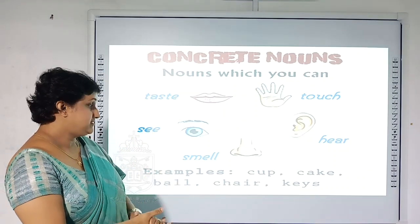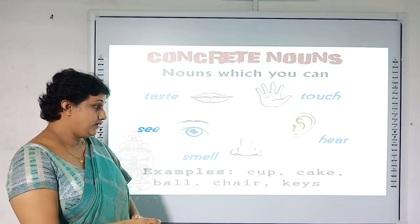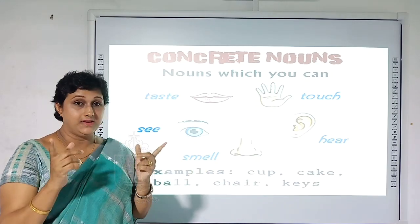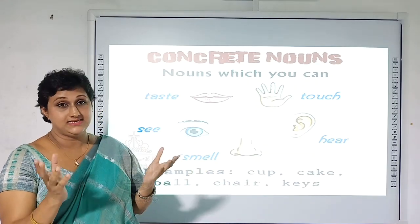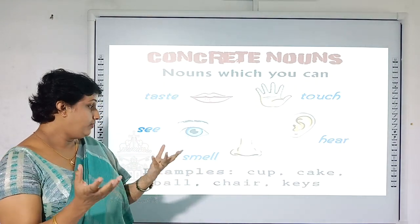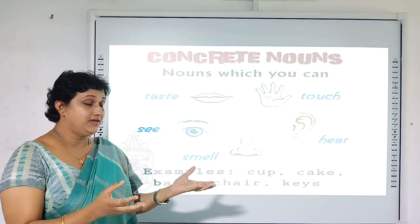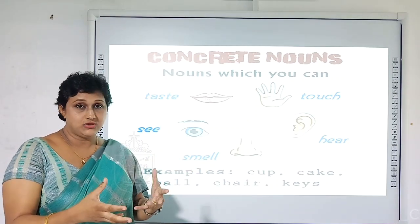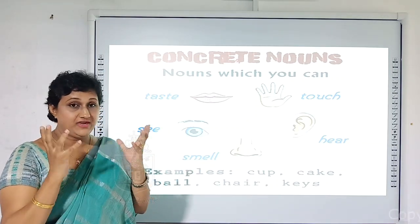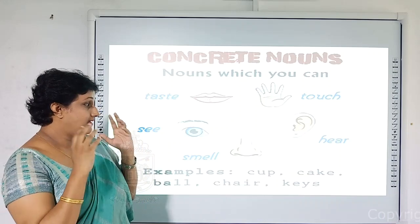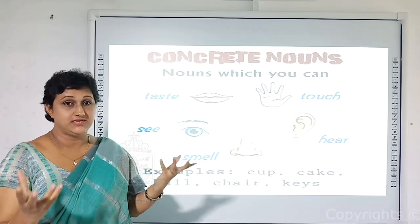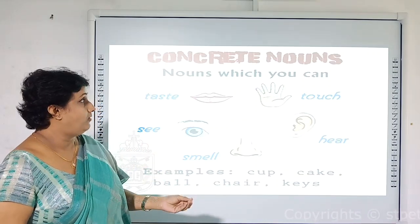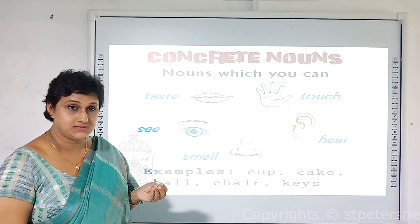Here are some examples of concrete nouns: cup — you can hold a cup; cake — you can smell or taste it; ball, chair, keys. All those things you can either touch, feel, hear, smell, see or taste. So these things are called concrete nouns.